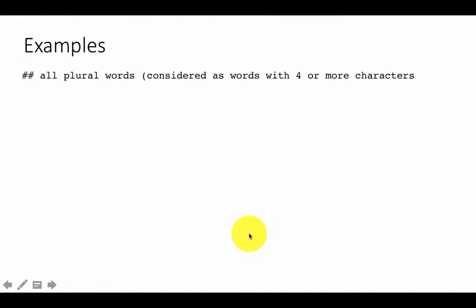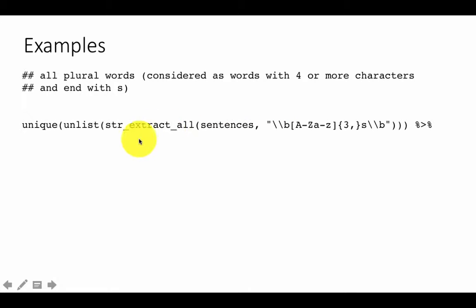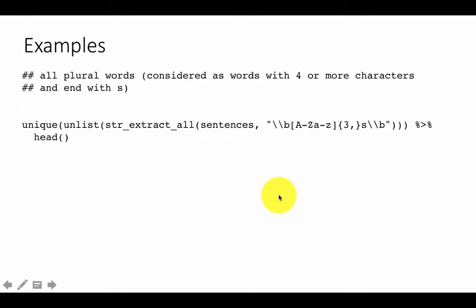Let's consider one more example: finding all plural words in our sentences. For our definition, any word with four or more characters that ends in an S is a plural word. That may not be strictly correct, but it catches most plurals. We use four or more characters because words like 'was' or 'ease' end in S but aren't plurals. Using `str_extract_all` on sentences, we match a word boundary, three or more regular characters, followed by an S. We check with `head()` and it works.